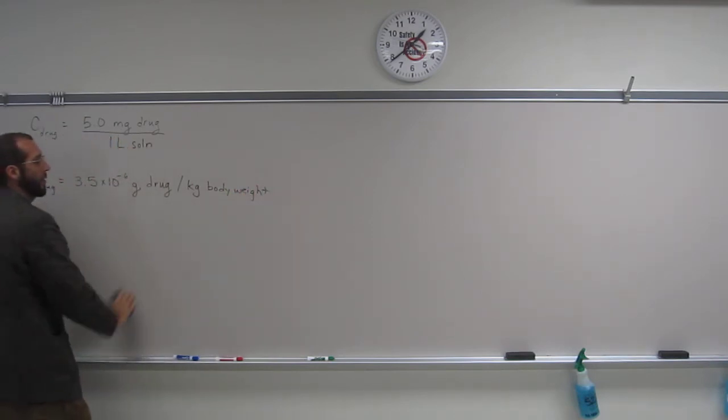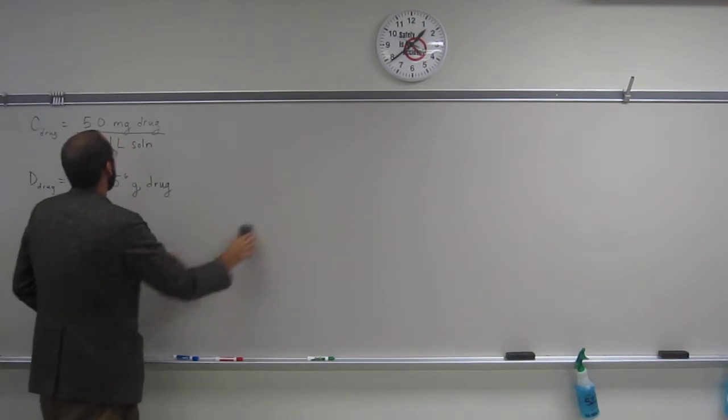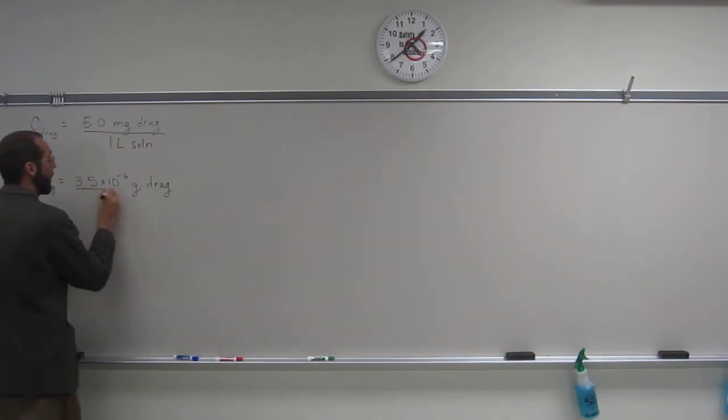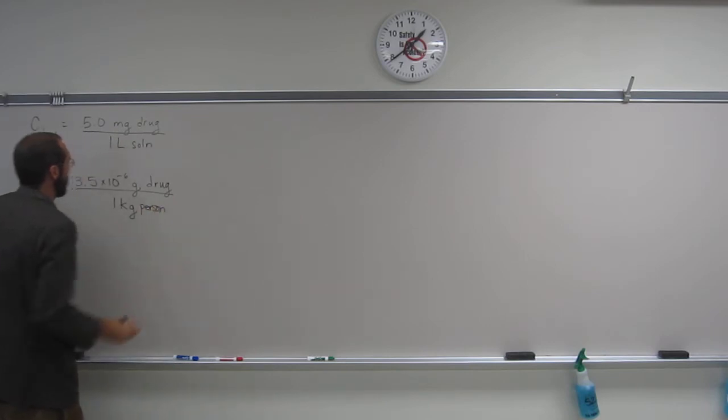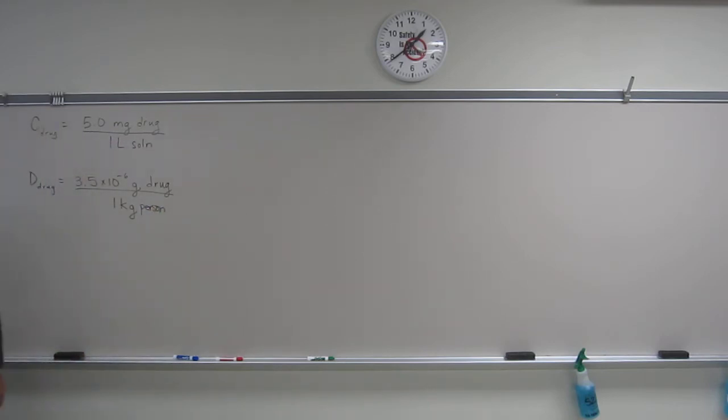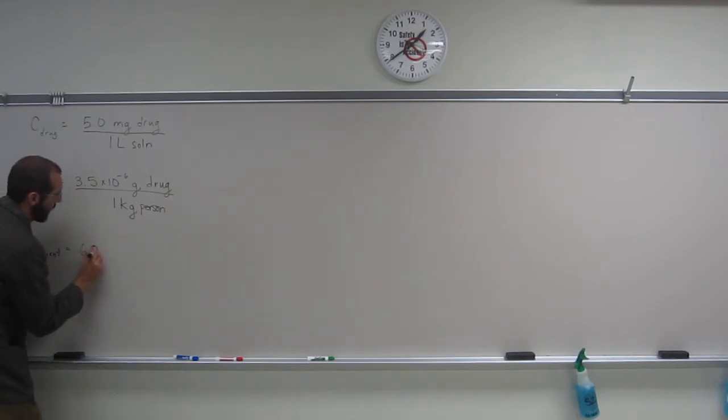But again, let's just rewrite this, so we'll say per one kilogram. And if we wanted to, we could even say per se. And the last thing it gives us is the weight of the patient. So the mass of the patient is going to be 68 kilograms.